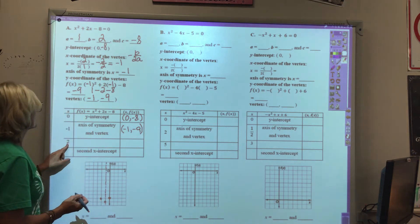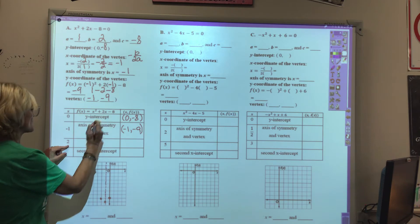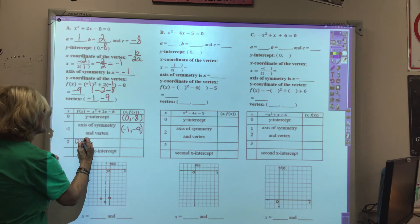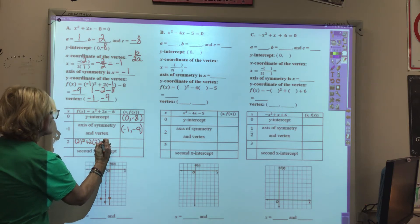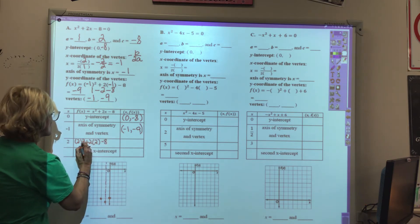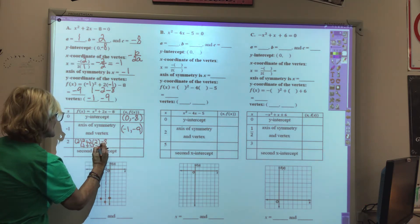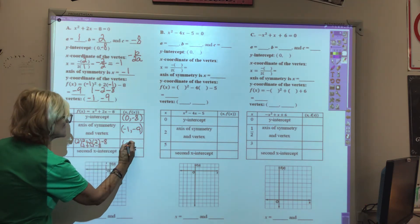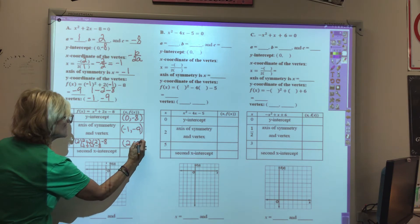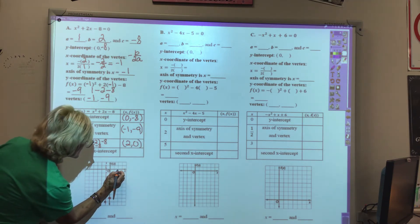We're going to plug in 2 into this function. So we'll have 2 squared plus 2 times 2 minus 8 would be 4 plus 4 minus 8. You see that gives you 0, so the point is 2, 0.